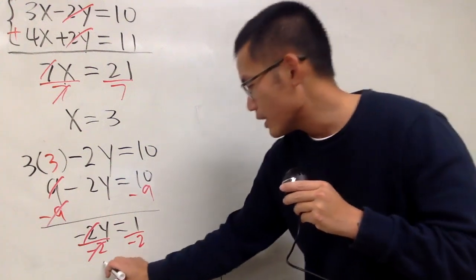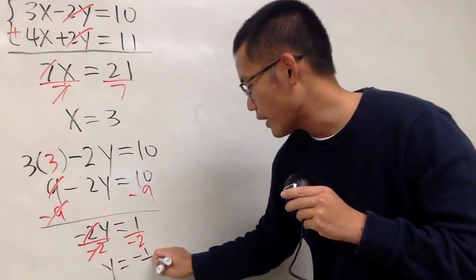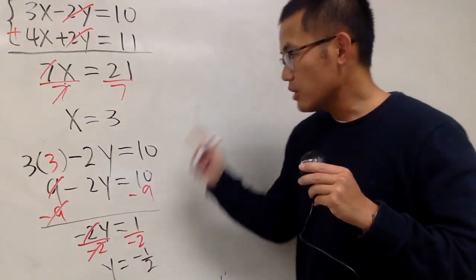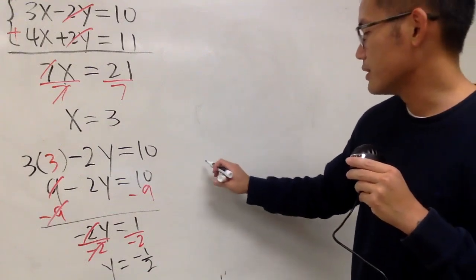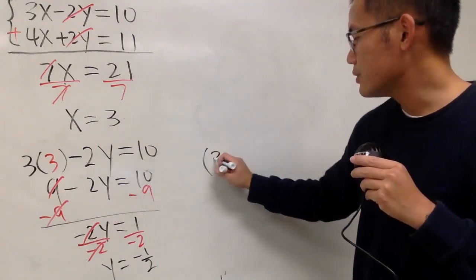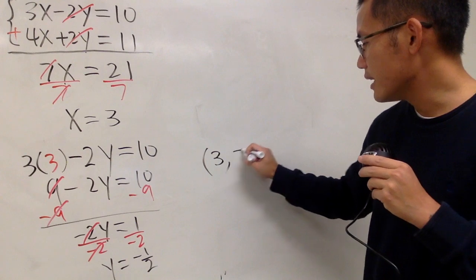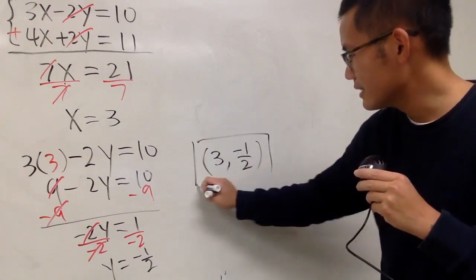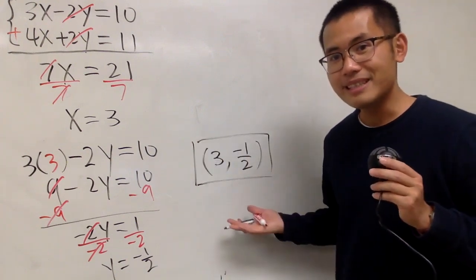Finally, we are saying that y is equal to negative 1 half, right? So this is the answer. I will just put this down here for you guys. The x is 3, and the y is negative 1 over 2, just like this. And that's it.